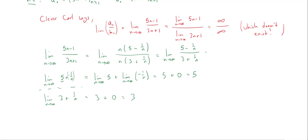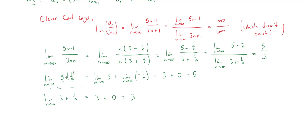Using the exact same reasoning, the denominator 3 plus 1/n converges to 3 plus 0, which equals 3. So we can now legitimately break this up as the limit of (5 minus 1/n) over the limit of (3 plus 1/n), giving 5 over 3. Once you're good at this you won't write all these details, but for now you must verify all the hypotheses hold.